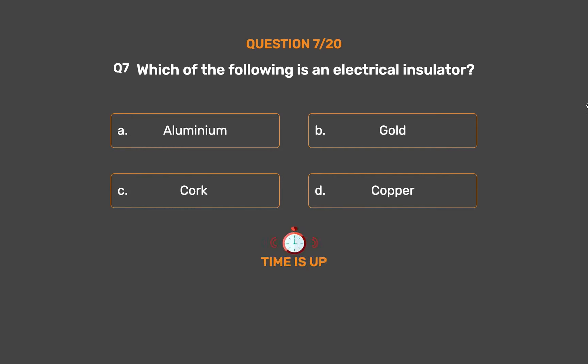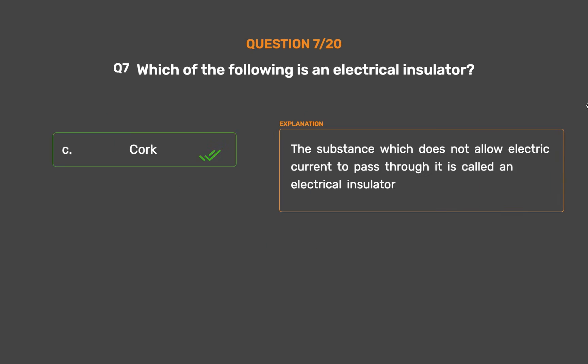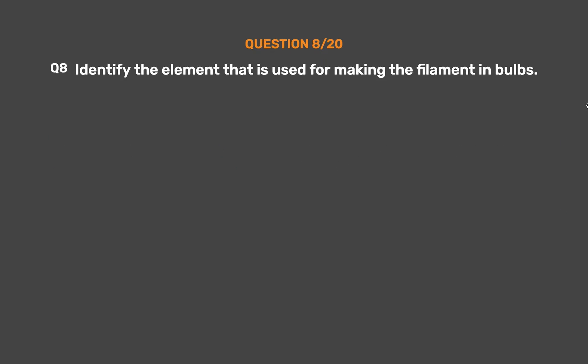The correct answer is Option C: Cork. The substance which does not allow electric current to pass through it is called an electrical insulator.